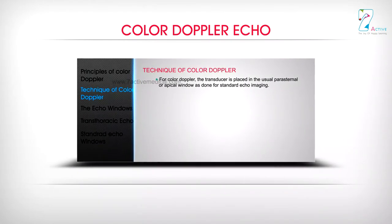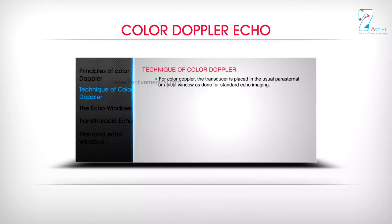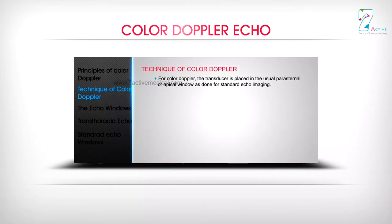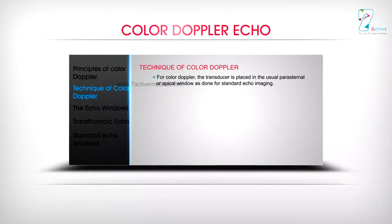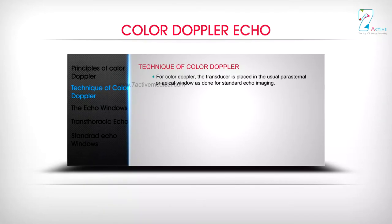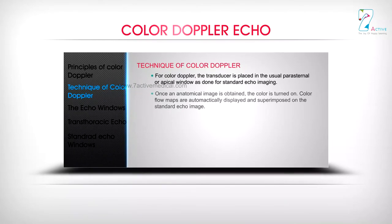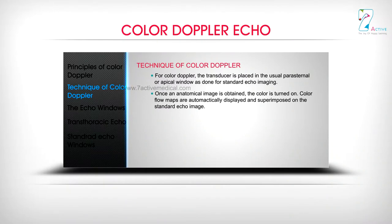For color Doppler, the transducer is placed in the usual parasternal or apical window as done for standard echo imaging. Once an anatomical image is obtained, the color is turned on, and color flow maps are automatically displayed and superimposed on the standard echo image.